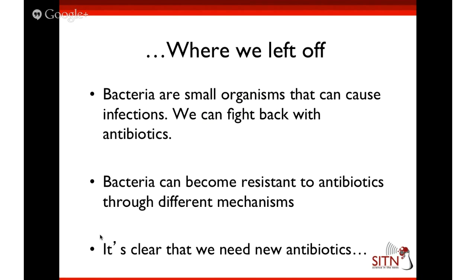So how would we recognize an antibiotic if we saw one? It turns out that despite having different structures, they actually share a number of key properties. The most important was that they hit an important bacterial process. Amy told us about different important bacterial processes such as replicating the DNA, building the cell wall, or constructing the cell membrane — all of these are important bacterial processes that antibiotics can disable.